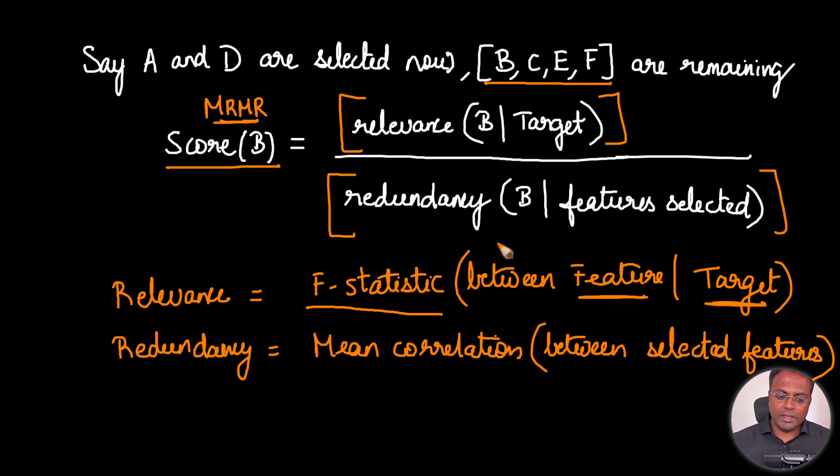In the denominator, we have the redundancy of B with respect to the features that are already selected. We have already selected A and D. We are going to compute the redundancy of B with respect to A and D. As per MRMR, what it does is, it calculates the correlation of B and A, then correlation of B and D, and takes the mean of that. We have the relevance, we have the redundancy. Higher the relevance, the better it is. Lower the redundancy, the better it is. Whichever variable got the highest score, that will get selected in the next iteration.